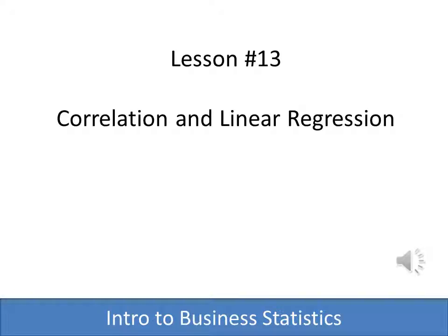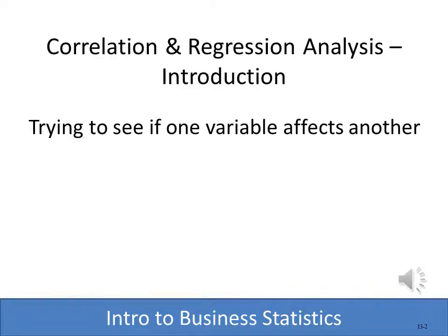In this lesson and the next, we're going to be talking about correlation and linear regression. When we're working with correlation and regression analysis, what we're essentially trying to find out is if one variable affects another. For instance, there might be a relationship between the number of classes a student attends in statistics and their final score. Correlation and regression analysis lets me prove or disprove my hypothesis.